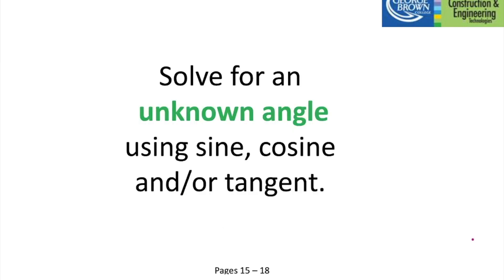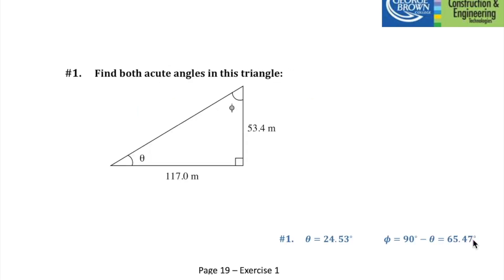Let's look at examples where you solve for an unknown angle using sine, cosine, or tangent. For these exercises, I recommend you flip to pages 15 to 18 for the theory, and the exercises begin on page 19. We're going to take a few from this page including exercise one, where you are asked to find the angles theta and phi. I'll go with theta first since theta is alphabetically before phi in the Greek alphabet.